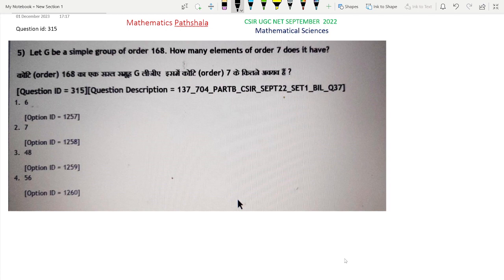See the question first. Let G be a simple group of order 168. How many elements of order 7 does it have? Let me first write the order of the element: order of G equals 168, which can be written as 7 times 3 times 2 to the power 3.